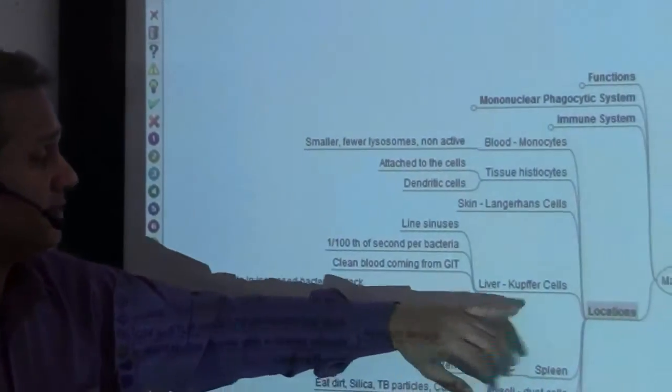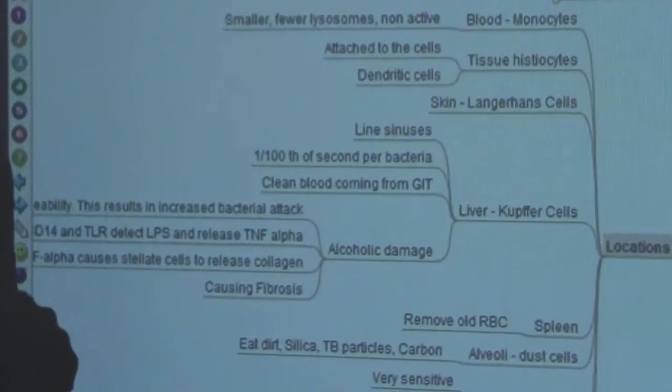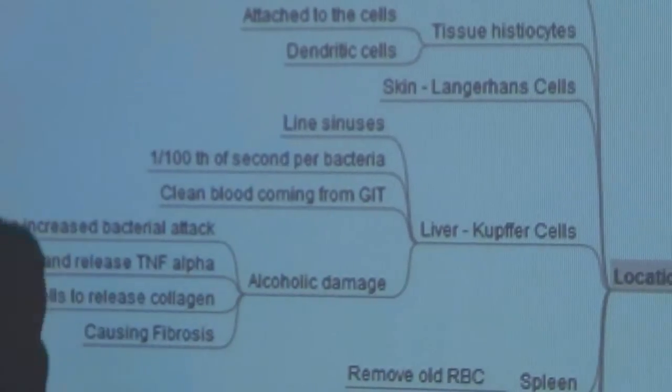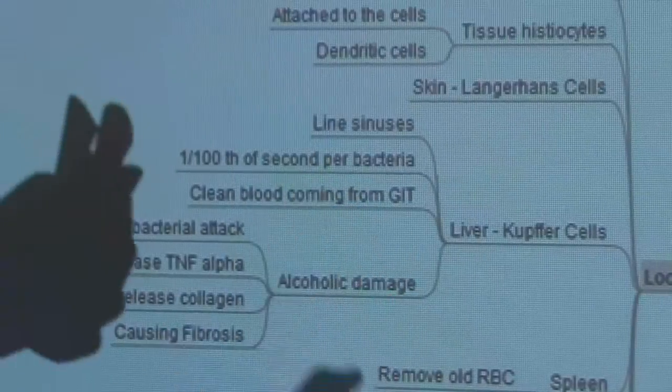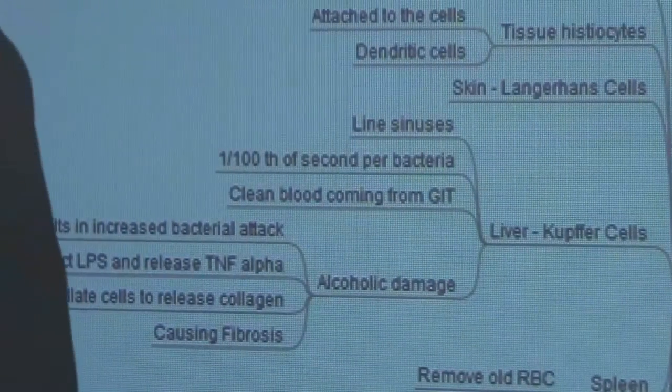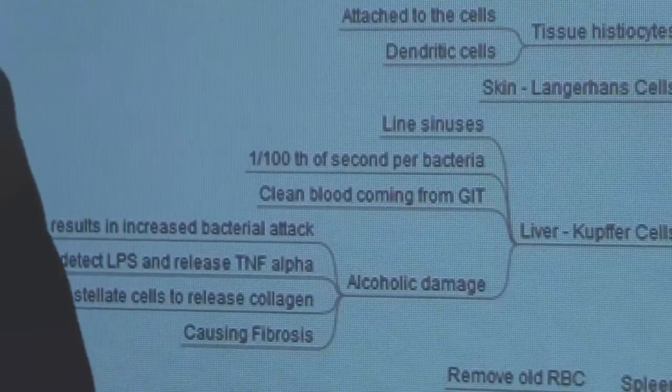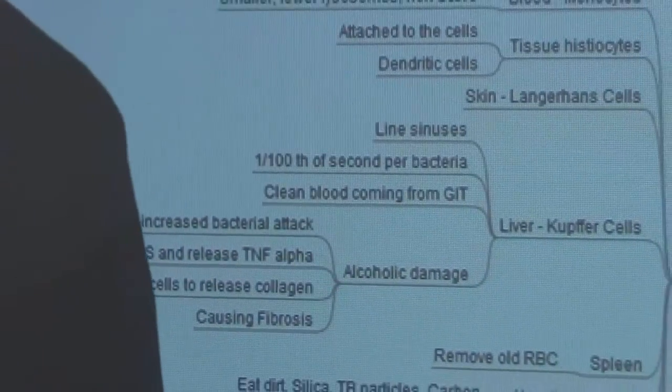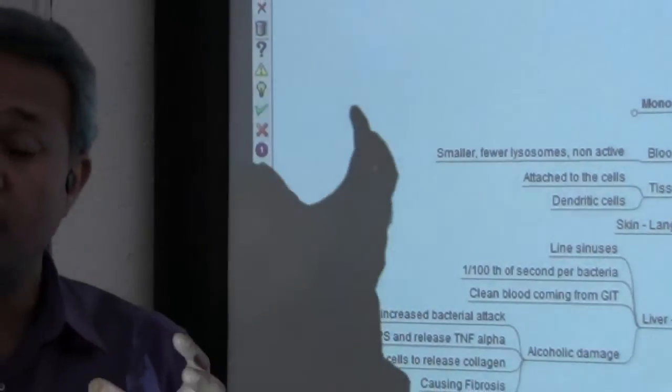So then, if you look at the macrophages, they are present in the liver as well. The liver sinuses are lined by macrophages. So remember what happens, the portal blood from the GIT, it flows through the portal system into the liver, into the liver sinuses. And who is sitting on the side of the liver sinuses? The macrophages. What are they doing? They are fishing. What are they fishing? Bacterias. Pathogens coming, attacking us from the GIT.